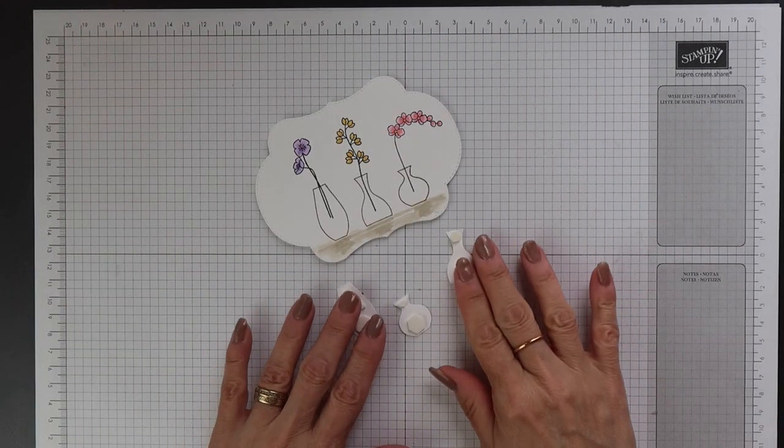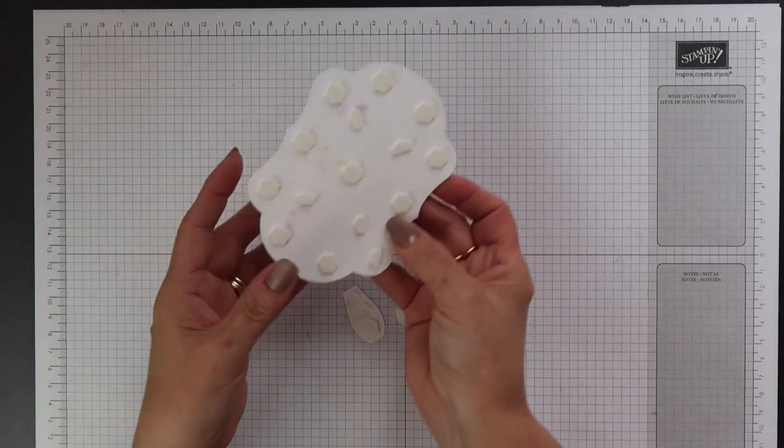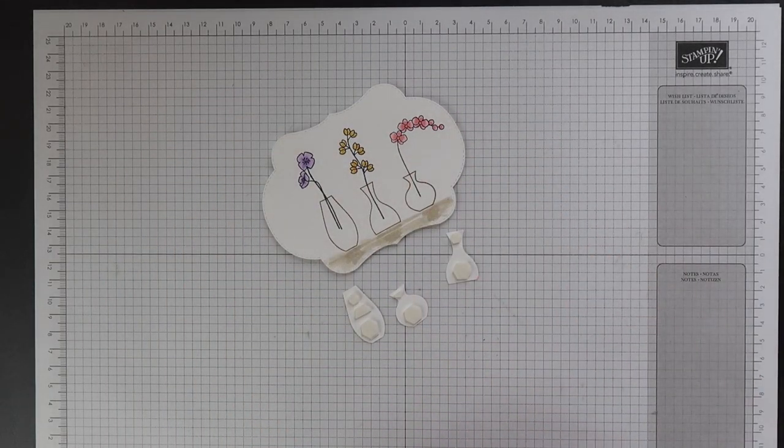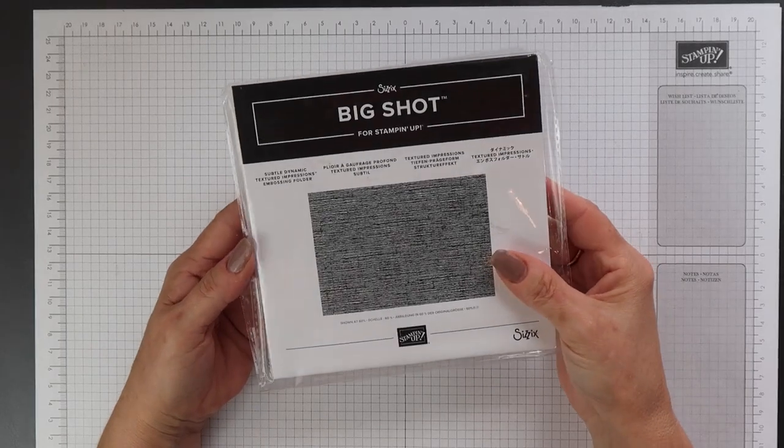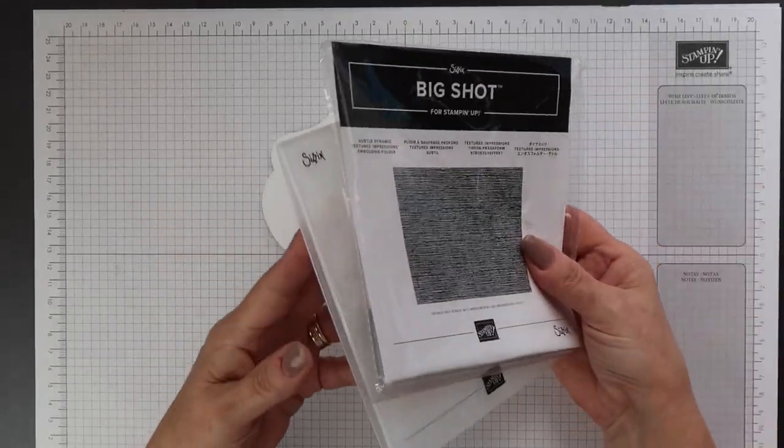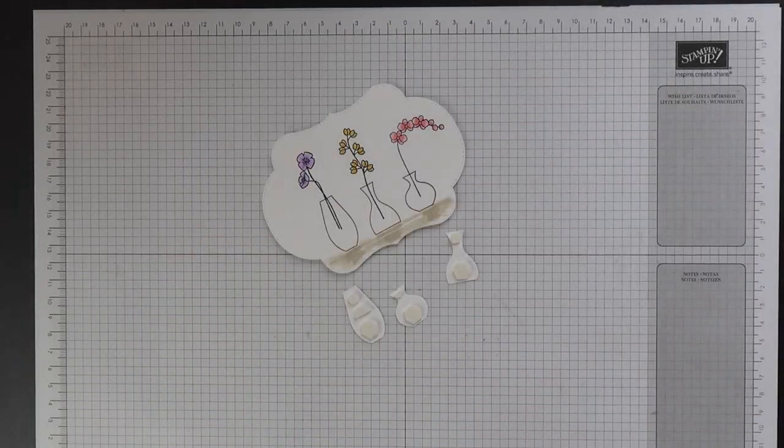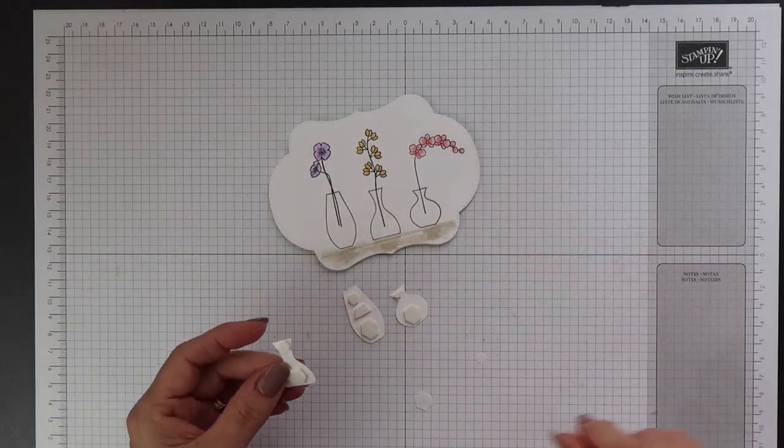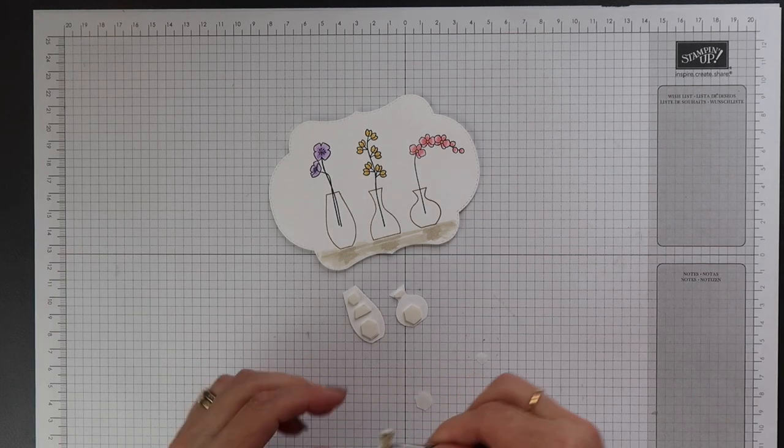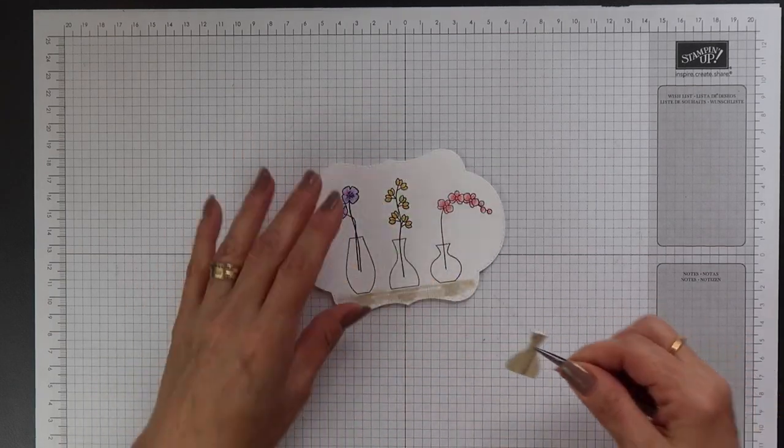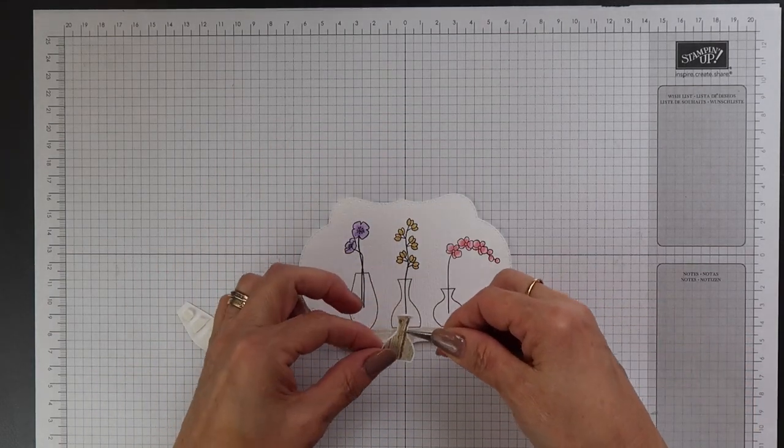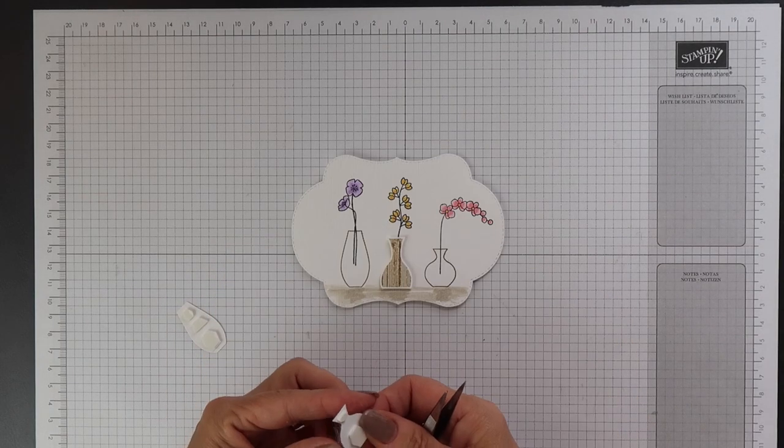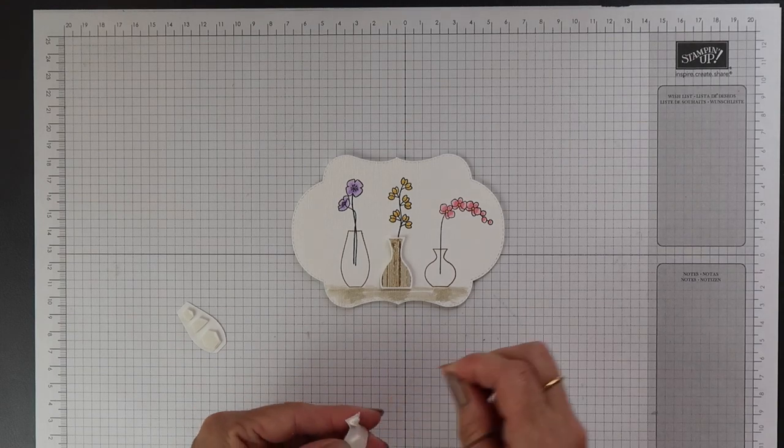I've gone ahead and added dimensionals onto the reverse of each vase. I've also added dimensionals onto the back of the image mat. Before I did this I ran it through the Big Shot using the subtle embossing folder. I wanted to add a little bit of texture because there's so much white space on that image mat. So now I can remove the backs from the dimensionals on those vases and I can position them onto my image mat.